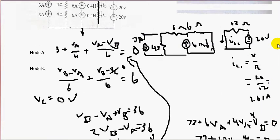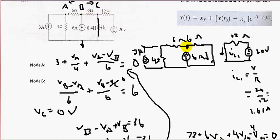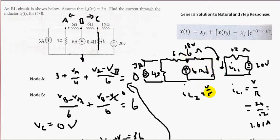Now we have VB equals 18 volts. We want to find the current going through this 6-ohm resistor — we'll call it IL2. Using V equals IR, so I equals V over R. Voltage at VB is 18, so 18 divided by 6 gives us 3 amps.